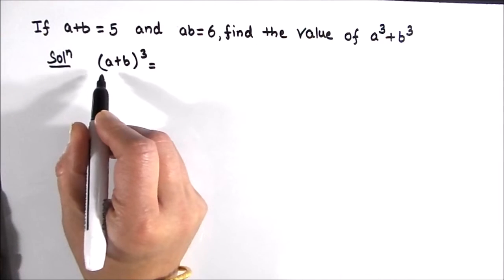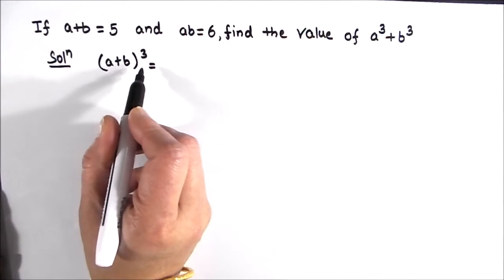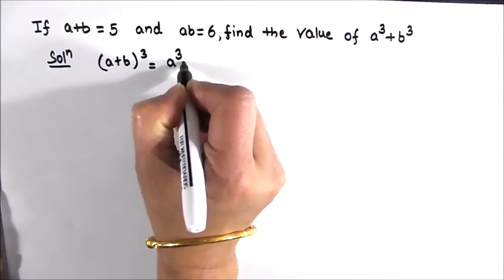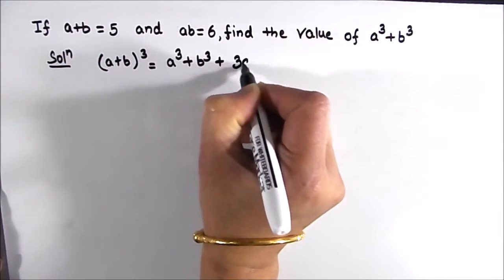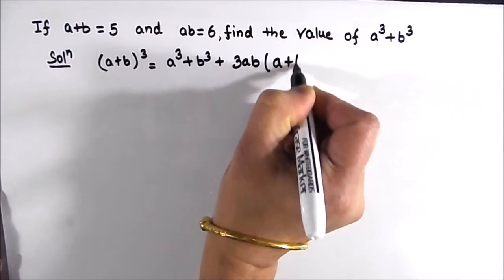Here we are going to make use of the formula for a plus b whole cube which is a cube plus b cube plus 3 times ab times a plus b.